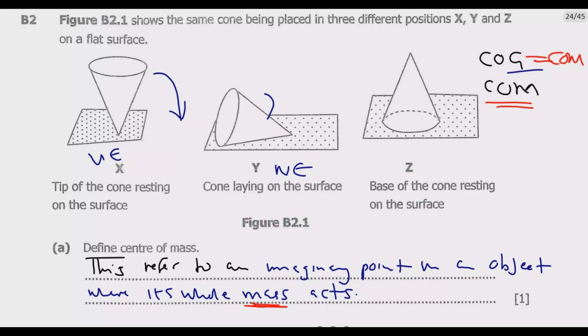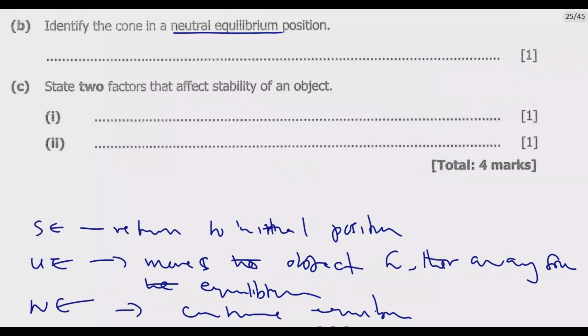Then you look at Z. Z is the stable equilibrium, because when you push it a bit, it will return back to the initial position. So you need to understand all these. Once you understand this, then it becomes easier. So you know that Y is in the neutral equilibrium.